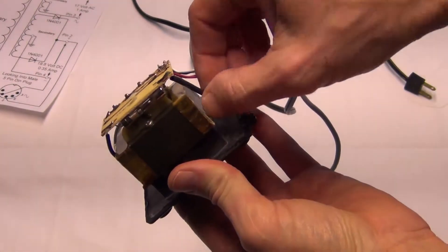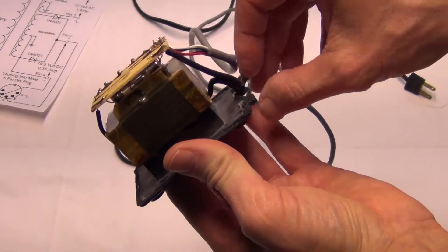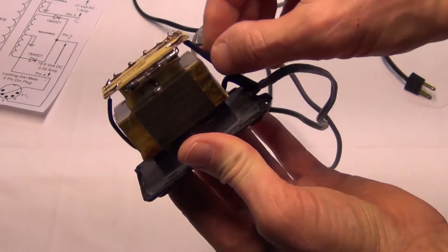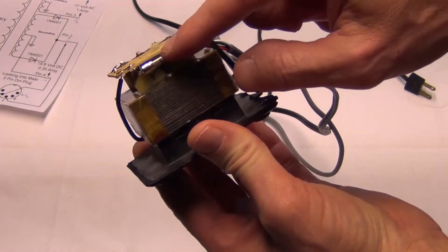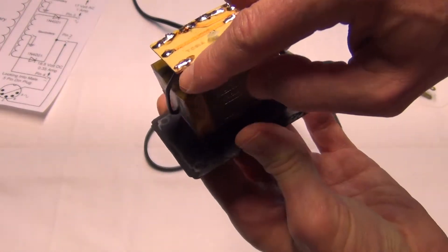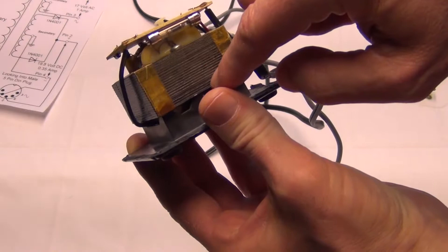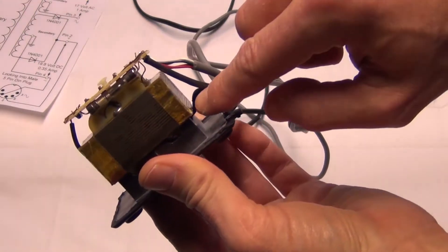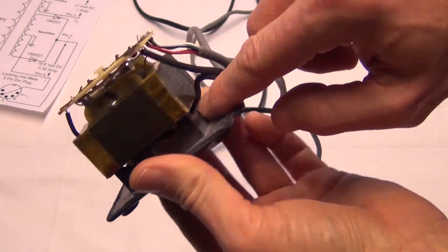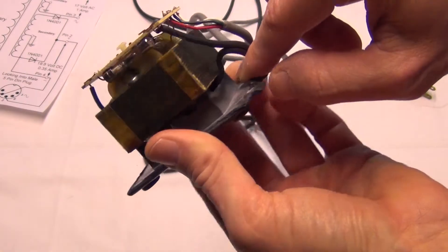And then here you can kind of see on the primary side, here's the power coming in. This is the AC here, this wire. It goes up to here, goes through this fuse. Then it comes out here and here's the wire going to the bottom side where the primary is.